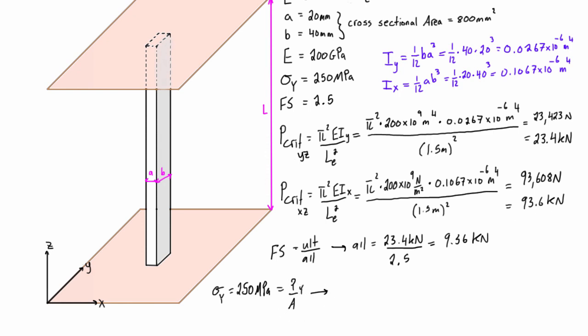We know that the cross-sectional area is 800 millimeters squared. So we get 250 times 10 to the 6 newtons per meter squared, that's megapascals, times our area which is 800 times 10 to the negative 6 meters squared. And that's going to be equal to 200,000 newtons, which is 200 kilonewtons.